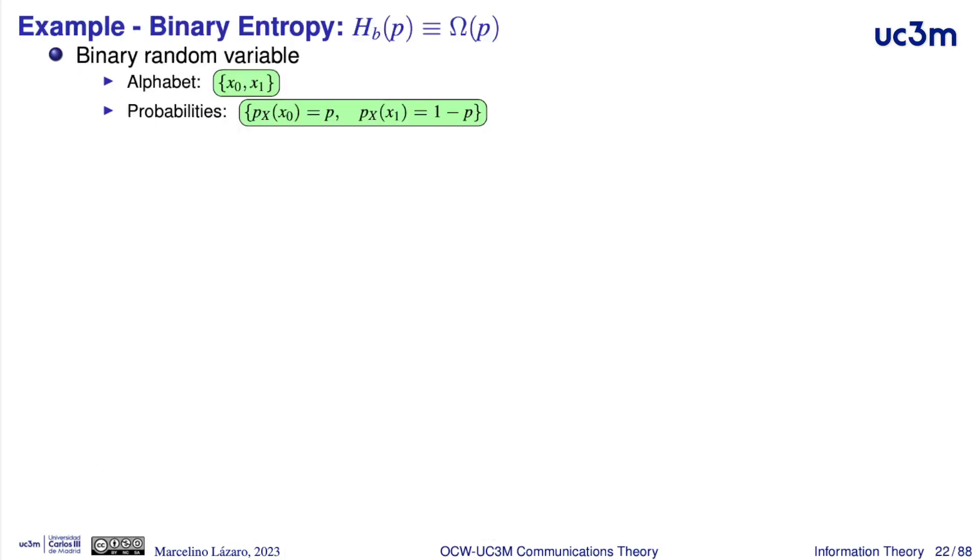Now, we will introduce the binary entropy function. This is a function with an argument, with its probability, the argument is p, the notation is Hb of p, or the Greek character omega of p.